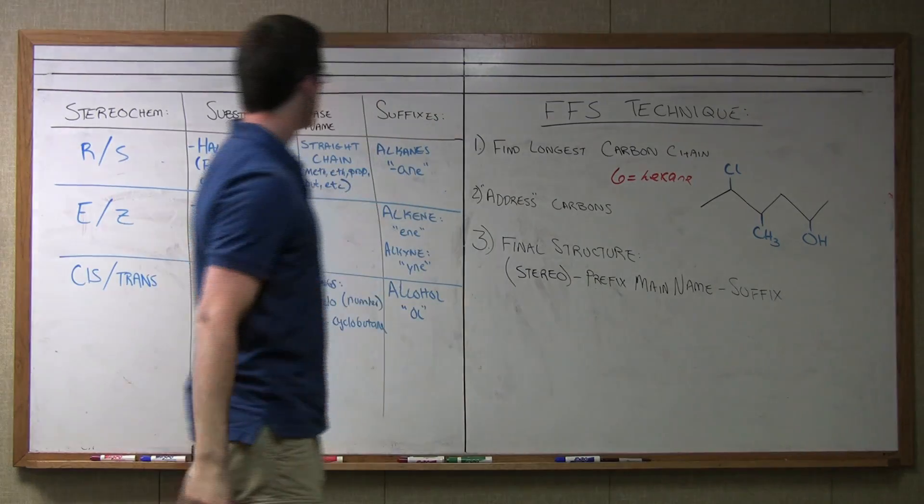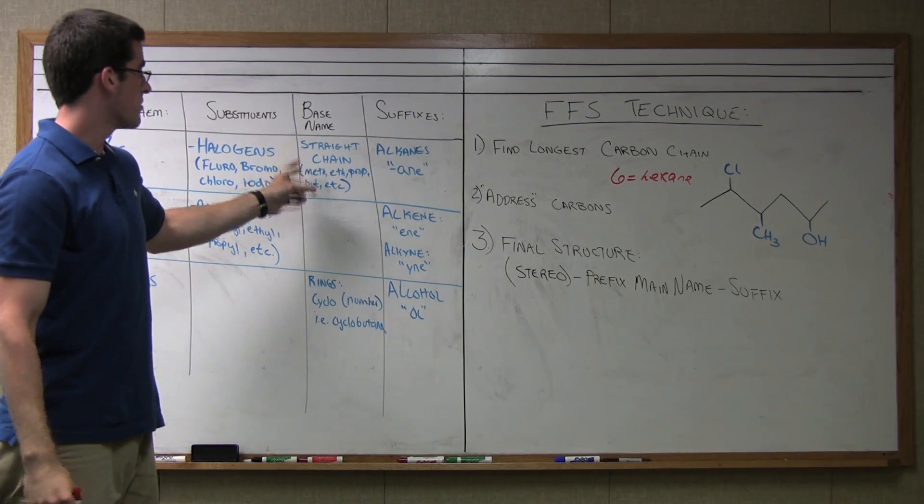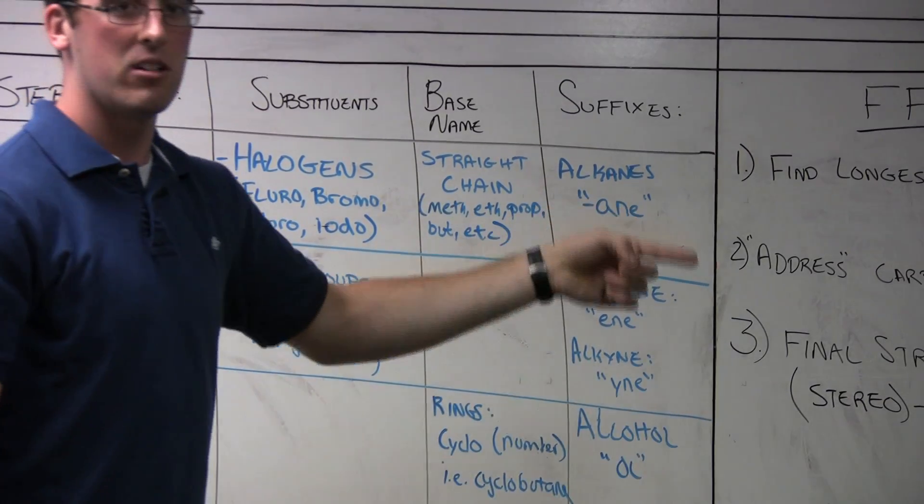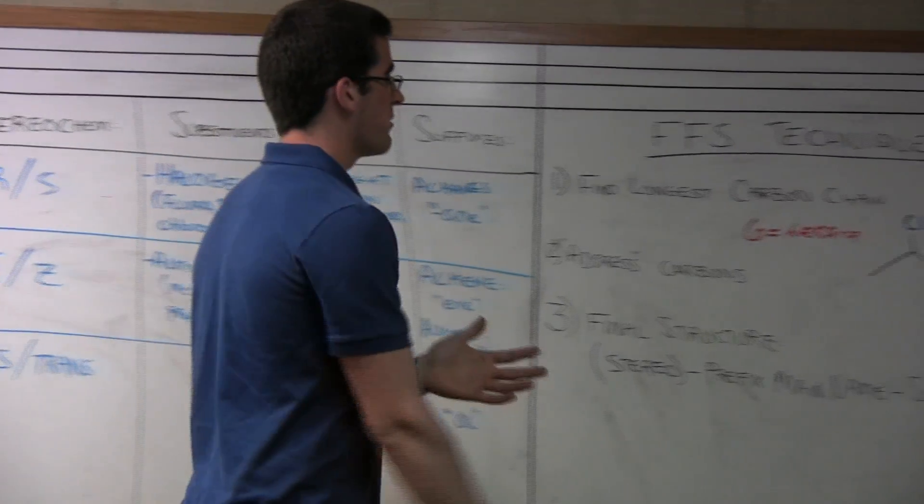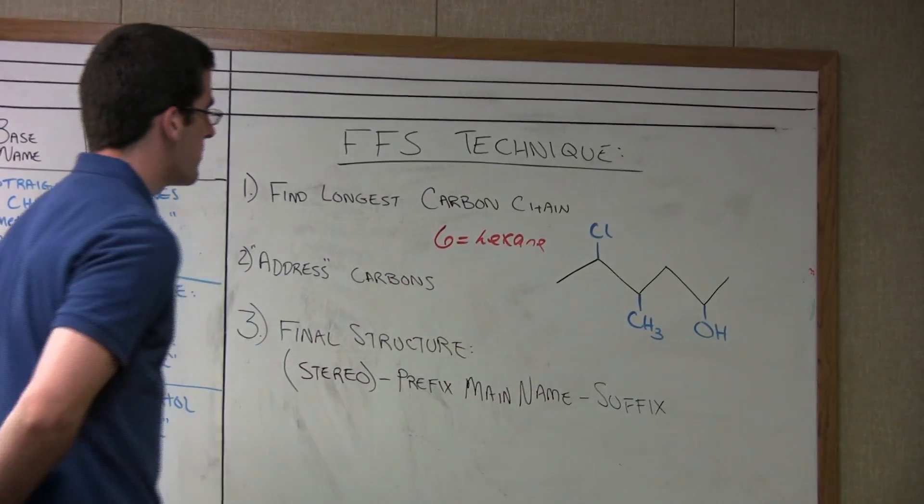Six carbons corresponds to a base name of hexane. It's also referenced in the chart here under base name. We're looking at straight chains, by the way: meth, eth, prop, but, etc., onward. Different names for how many carbons are in the chain. Now that we've established the main carbon chain here,